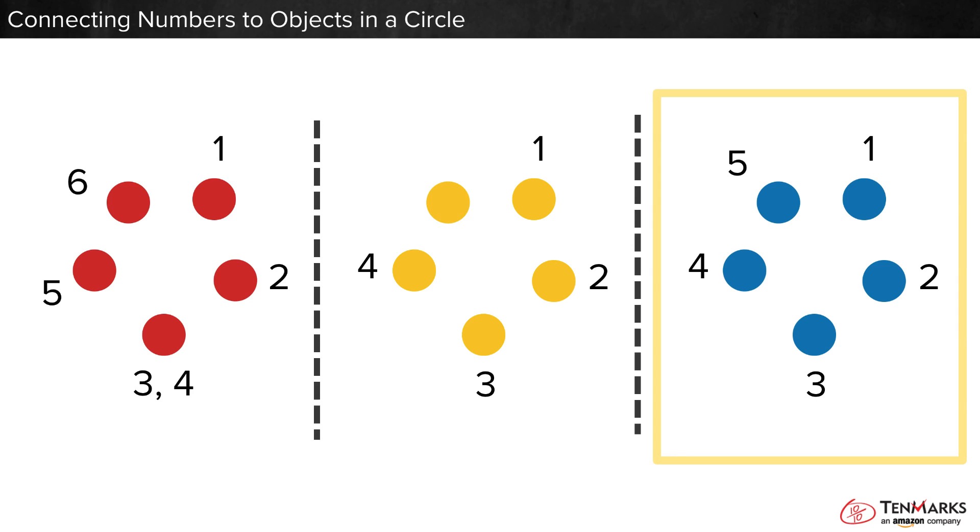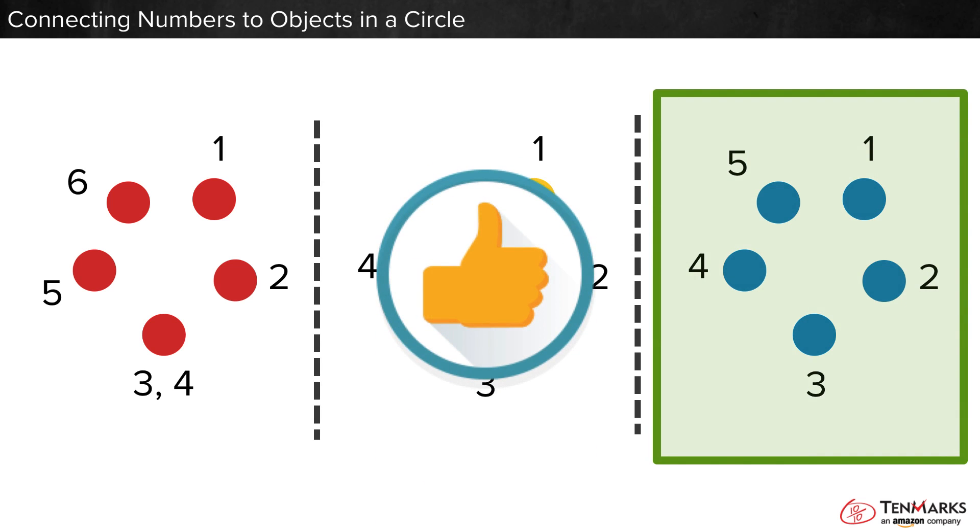The third picture counts one, two, three, four, five. There is one number on each dot. No dots are skipped. Pick this one. It is counted correctly. We found the set that is counted correctly.